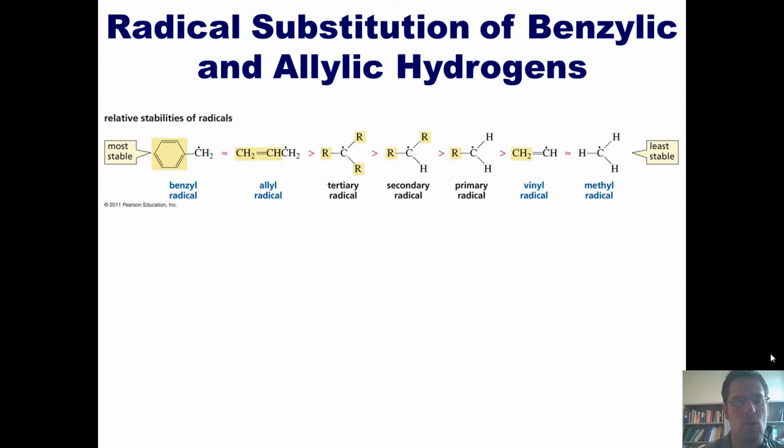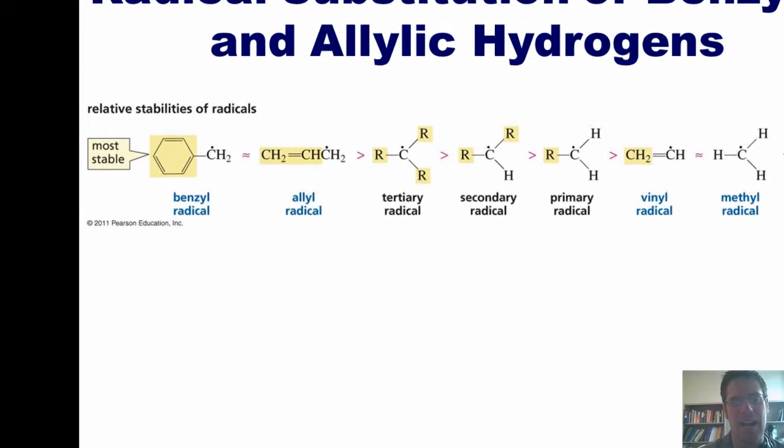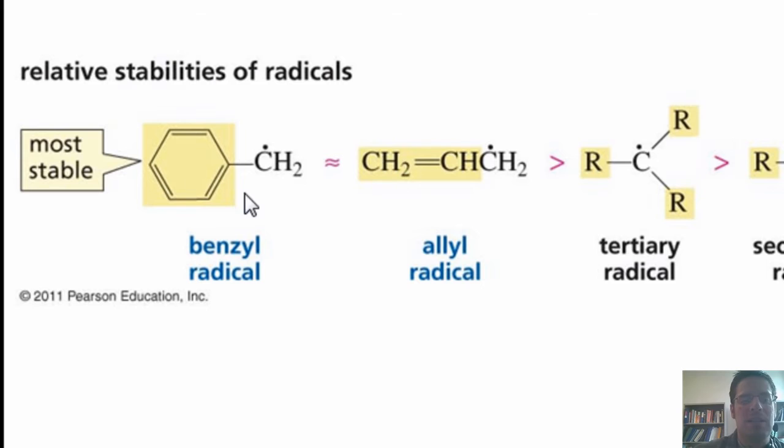In this video, I'm going to teach you what occurs when we do radical substitution reactions with substances that contain benzylic or allylic hydrogens. First of all, I need to remind you what a benzylic or allylic hydrogen is. A benzylic hydrogen is a hydrogen that is attached to a carbon that is one position away from a benzene ring.